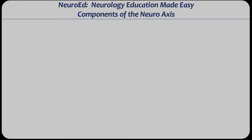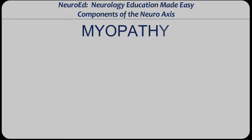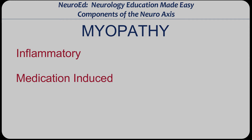This video is on muscle disorders. What is a muscle disorder called? It's called a myopathy. How do you categorize muscle disorders? There are many different ways, but one way would be based on etiology. One bucket would be inflammatory, such as polymyositis or dermatomyositis. Another would be medication-induced, such as statins or steroids. And a big category would be congenital or inherited myopathies.